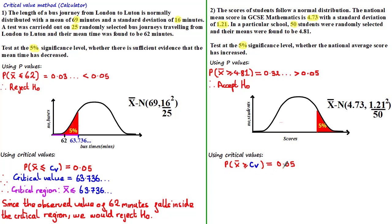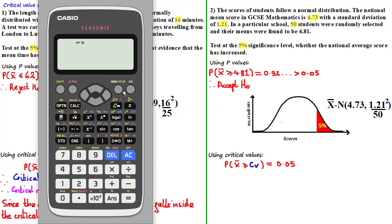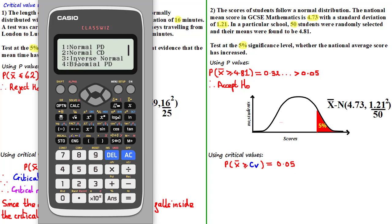Using the calculator, we need to go to menu, press 7 for distribution, press 3 for the inverse normal function. Now for the area, since the significance level is 5% and we are looking at the upper tail, you need to be careful in this case. Inputting a value of 5% or 0.05 would be incorrect, as the calculator would read this as the first 5% of the data, which would actually be the lower tail.